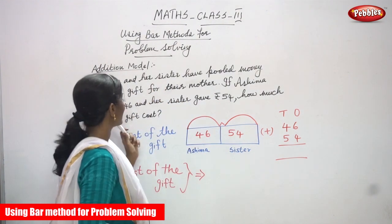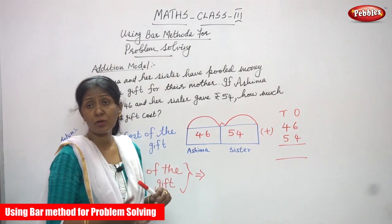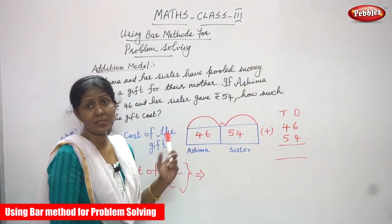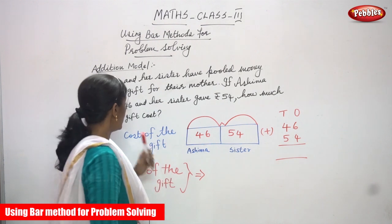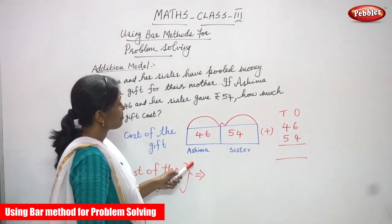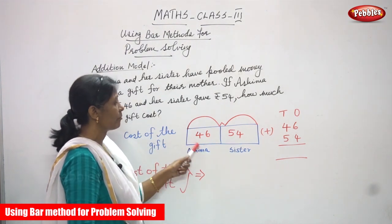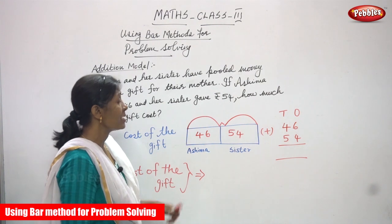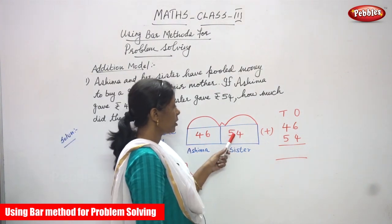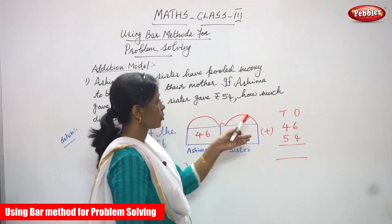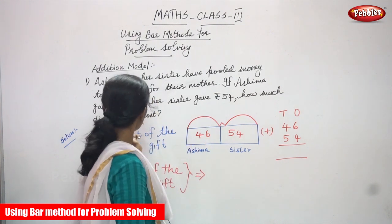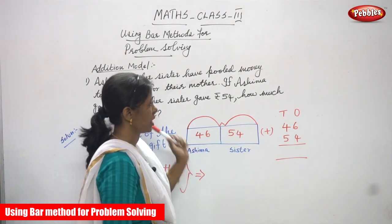How much did the gift cost? That means the cost of the gift — this is the question they are asking. The cost of the gift is: Azima contributed 46 rupees and Azima's sister gave 54 rupees. So you have to add to find how much the gift cost. It is an addition.